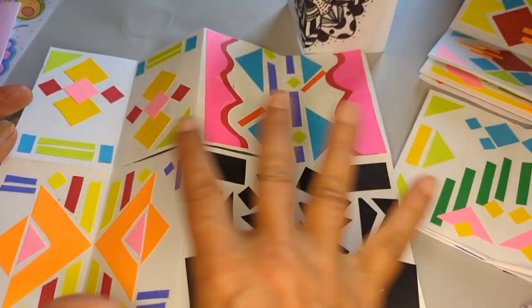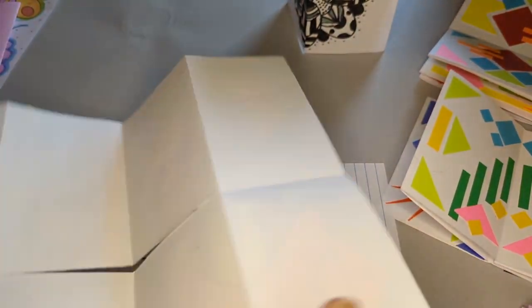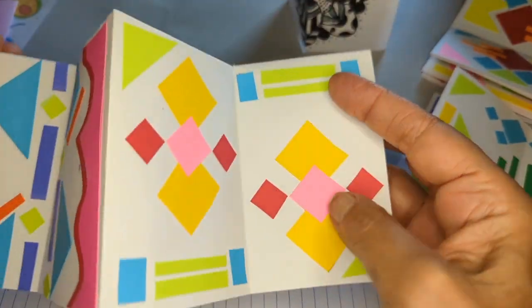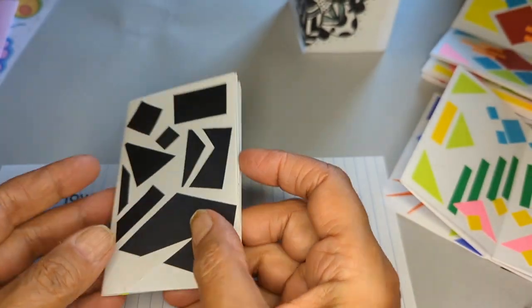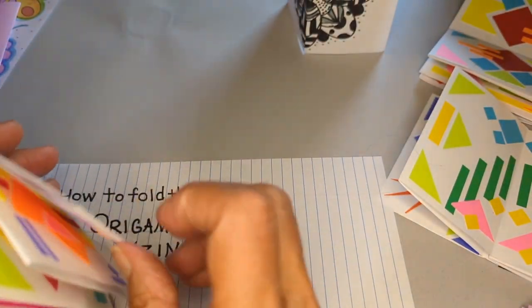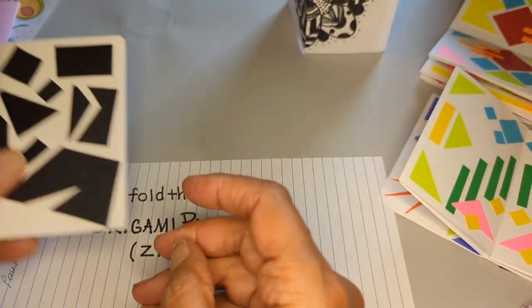You don't have to worry about glue migrating to the back and messing things up because this book just folds up and has those double pages so you don't have to worry about the other side.